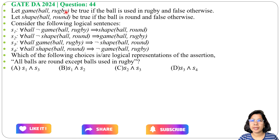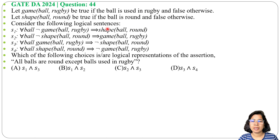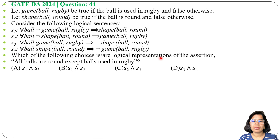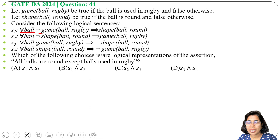Let's solve one previous question of mathematical logic. This question was asked in GATE 2024, question number 44. Let 'game_ball_rugby' be true if the ball is used in rugby and false otherwise. Let 'shape_ball_round' be true if the ball is round and false otherwise. Consider the following logical sentences — four logical sentences are given. Which of the following choices is or are a logical representation of the statement: 'All balls are round except balls used in rugby'? Four options are given.